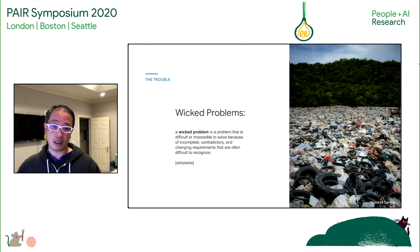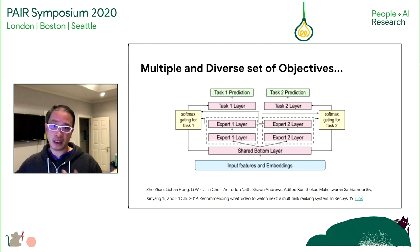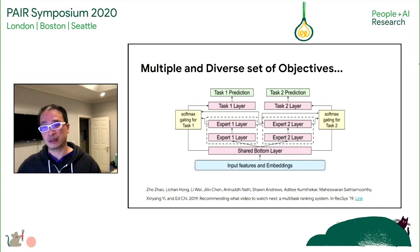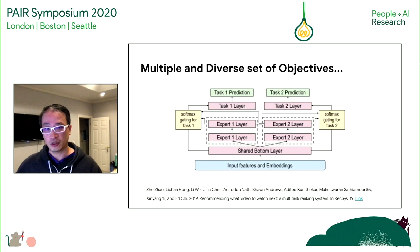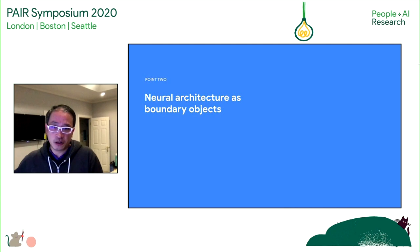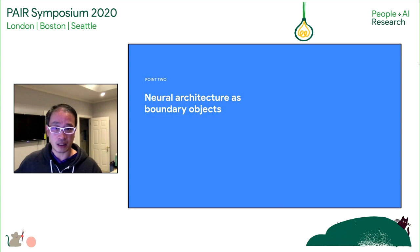For example, when building recommender systems, a common past technique was to simply optimize for a single objective. But nowadays it's become much more common to solve for a multiple and diverse set of objectives using neural architectures. This is an actual architectural diagram we presented as a recommender neural architecture in a RecSys paper. Even if you haven't done neural modeling, the diagram can give you a sense of what's going on in the system — there are multiple objectives that you're trying to optimize at the same time.